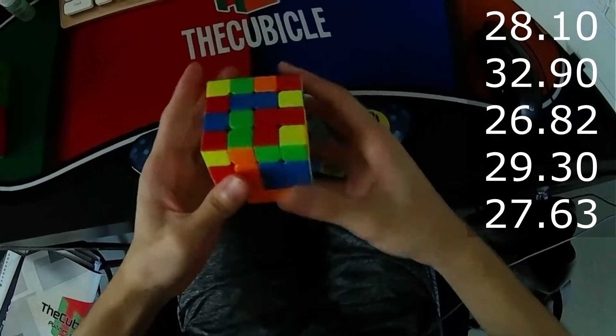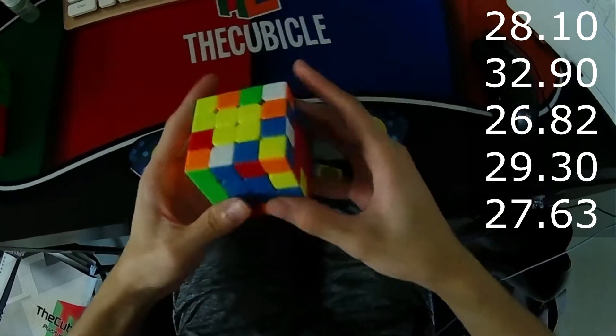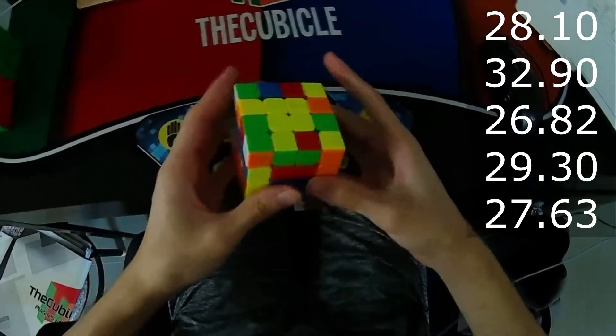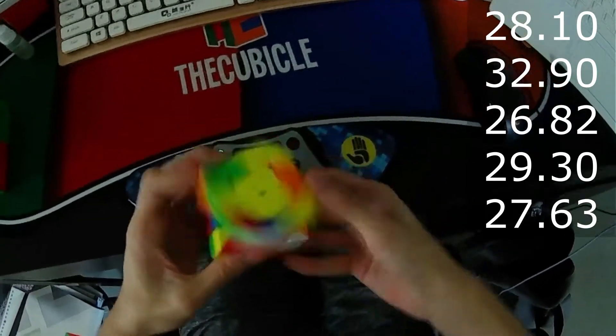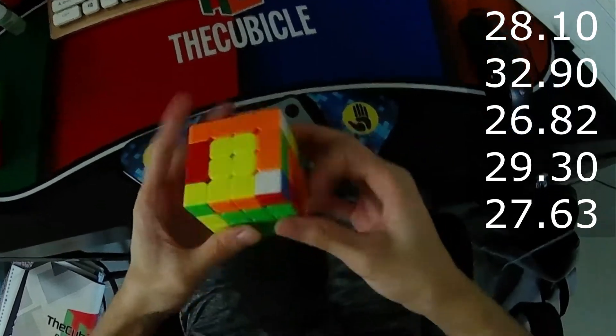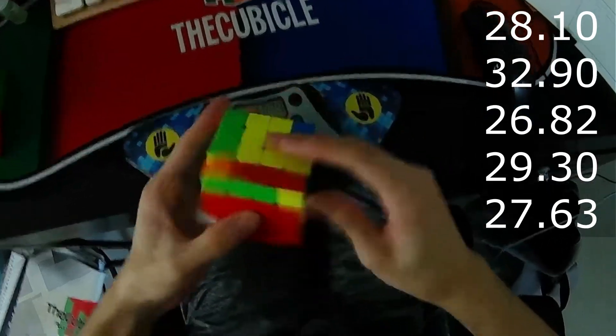So if you want to get this puzzle, be sure to get it at thecubicle.com. And I prefer you getting the setup version, like Sebastian's MGC 4x4, Angstrom 4x4, the Angstrom MGC 4x4, or other premium setups from thecubicle.com.